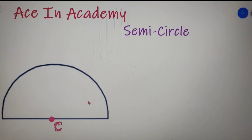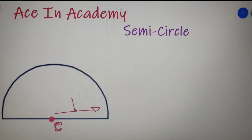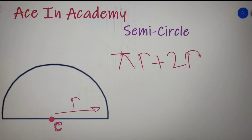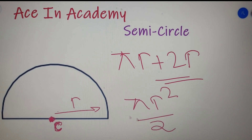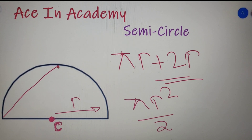Let's do a quick summary of all the topics covered in this video. The distance between the center and the boundary of a semicircle is called the radius. The perimeter of the semicircle is equal to πr + 2r. The area of a semicircle equals πr² divided by 2. And the triangle formed by the endpoints of the semicircle with any point lying on the arc is always a right angle triangle.